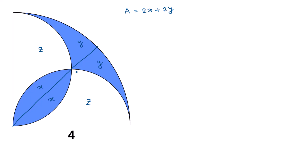First, consider the full area of the large quarter circle. The total area is twice x plus twice y plus twice z, which equals one fourth of the large circle. Its radius is 4, so we write (π × 4²) / 4 = 4π. Consider this as equation number one: 2x + 2y + 2z = 4π.